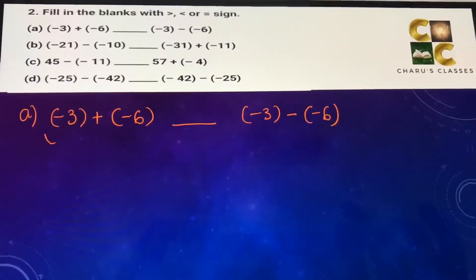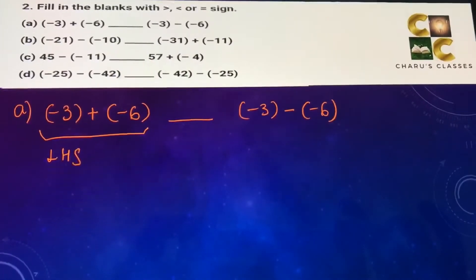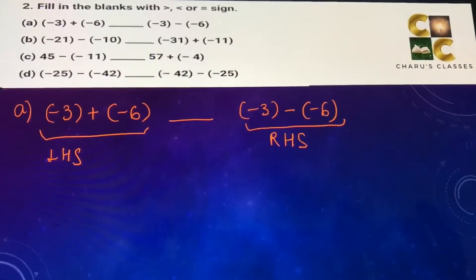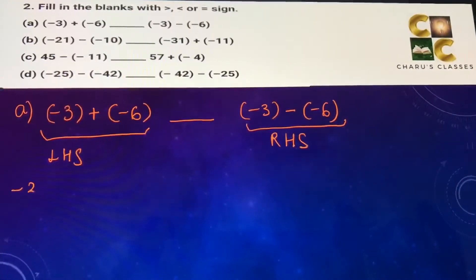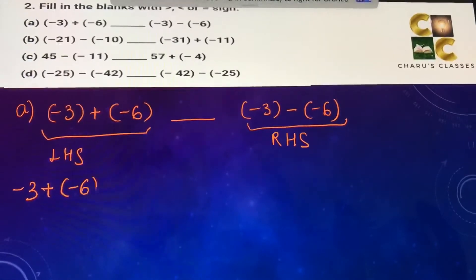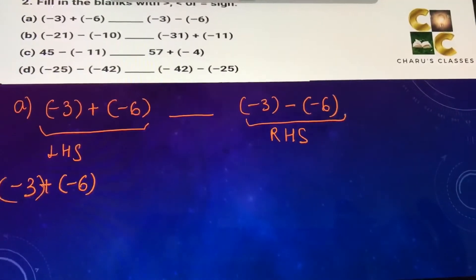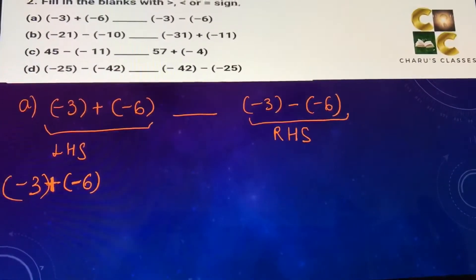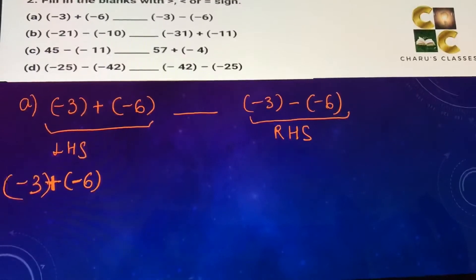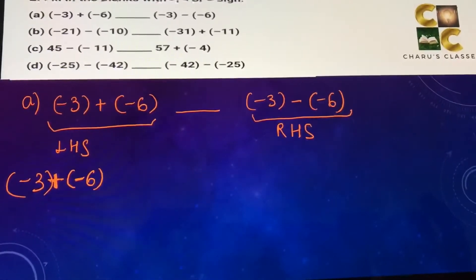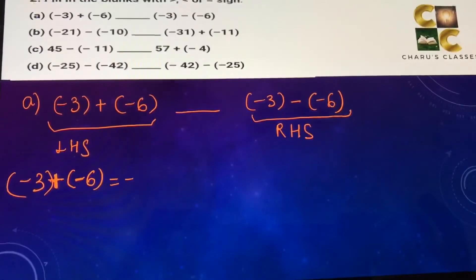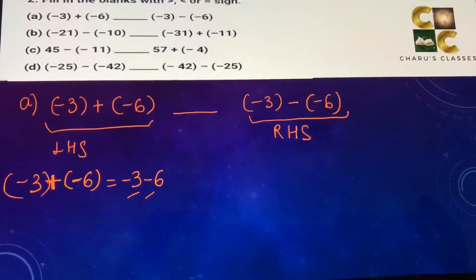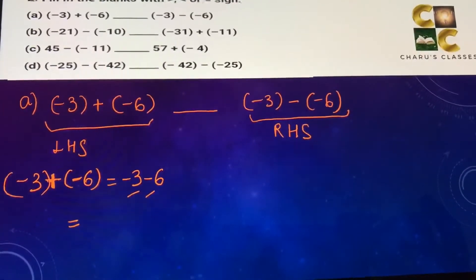First, let's look at the left hand side and check what is coming here. So minus 3 plus minus 6 — as I told you before, if there is a plus outside the bracket and minus inside, or minus outside and plus inside, they become negative. So this is minus 3 minus 6.